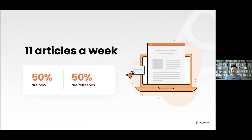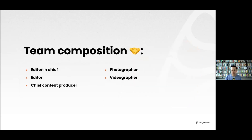The survival niche covers things like tents, building bunkers, how to treat your water, how to survive an EMP shock. We produce 11 articles a week — 50% are new and 50% are content refreshes. Our team composition is only five people: an editor in chief, an editor, and a chief content producer.